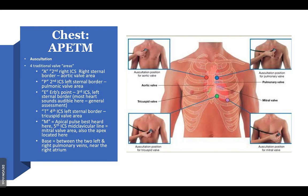Most of us know the APETM mnemonic. Auscultate first over the aortic valve region — anatomically at the second right intercostal space on the right sternal border. P is the pulmonic valve area at the second intercostal space left sternal border. Erb's point is at the third intercostal space left sternal border — a great place for a quick general survey since most heart sounds are audible there. The tricuspid valve area (T) is at the fourth intercostal space left sternal border. The mitral valve area (M) is at the fifth intercostal space at the midclavicular line — also where the apex of the heart is located.